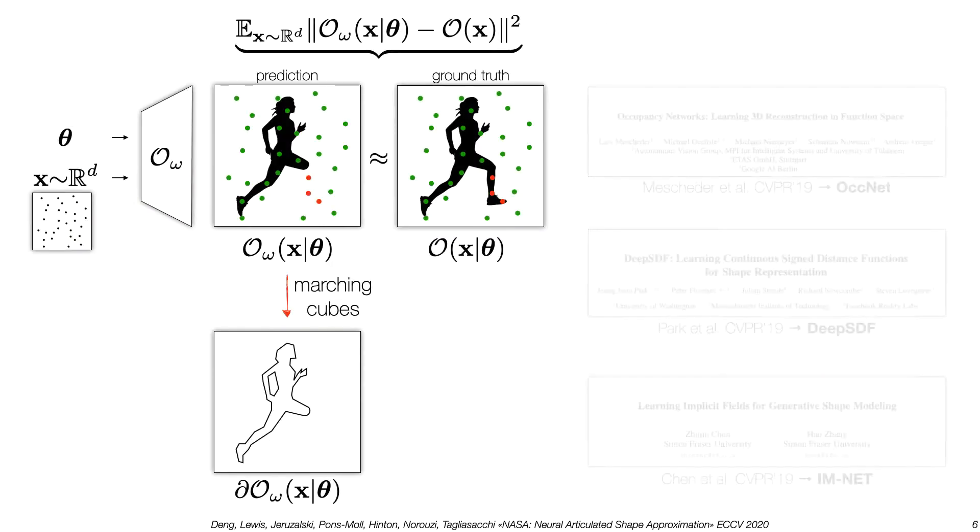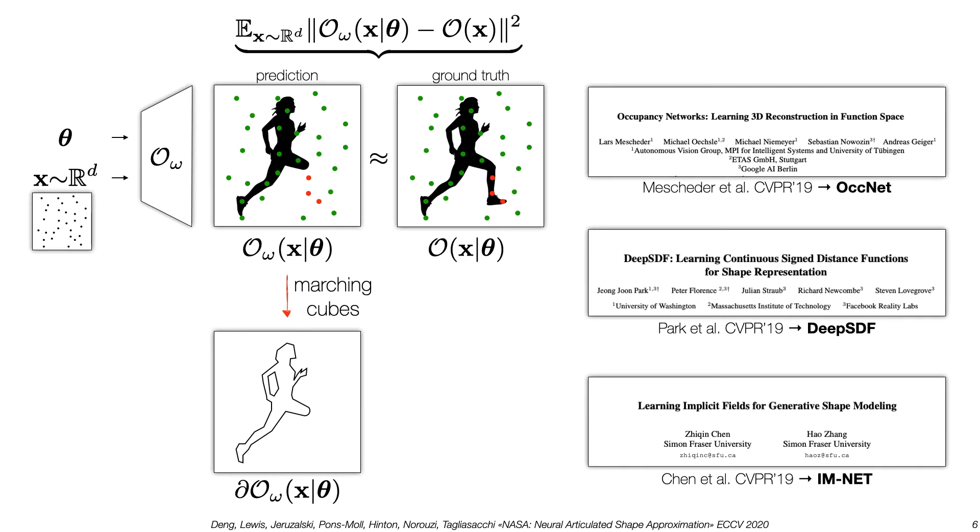We leverage recent development in neural implicit 3D representations. These models are trained by querying random samples in space, computing the occupancy predicted by the network, and then comparing whether the inside-outside label matches the ground truth. If a surface representation is needed, it's usually extracted by ISO surfacing.